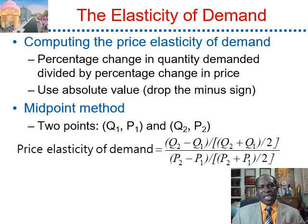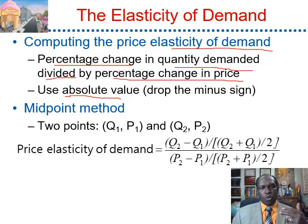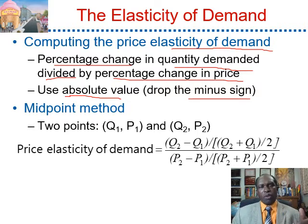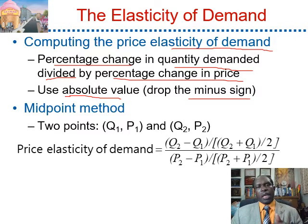To compute the price elasticity of demand, the first method is taking the percentage change in the quantity demanded divided by the percentage change in the price. If we use the absolute value, we drop the minus sign. For instance, if the price of gasoline increases by 10%, the quantity demanded of gasoline will decrease by 5%. Therefore, the value of the elasticity would be negative 5 divided by 10, which is negative one-half. We drop the minus sign, so the value of the elasticity will be 0.5, meaning that a 1% increase in the price of gasoline will reduce the quantity demanded of gasoline by half a percent.